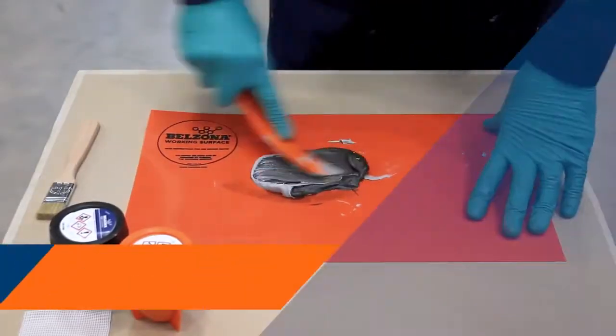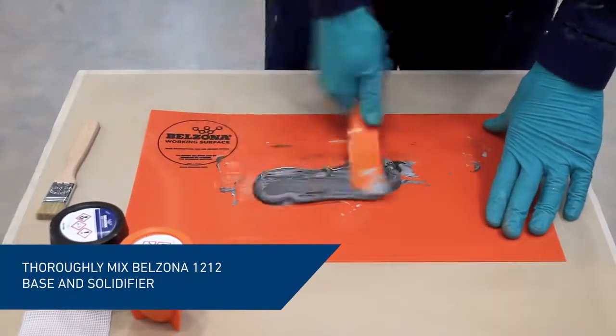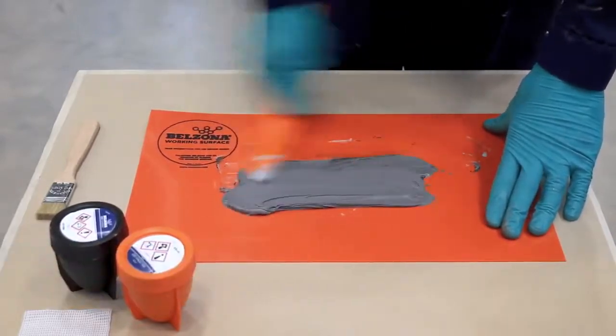Thoroughly, in a figure eight motion, mix together the two components until the material turns into a slate gray uniform color.